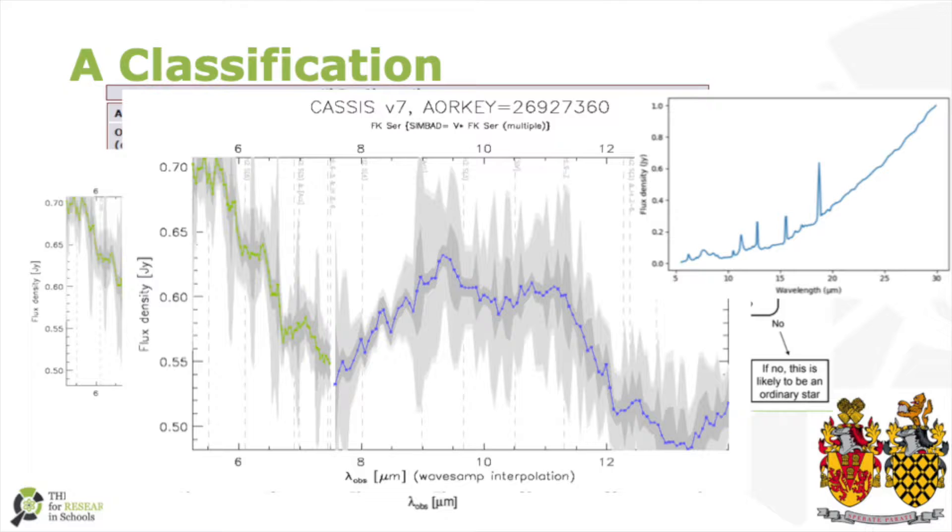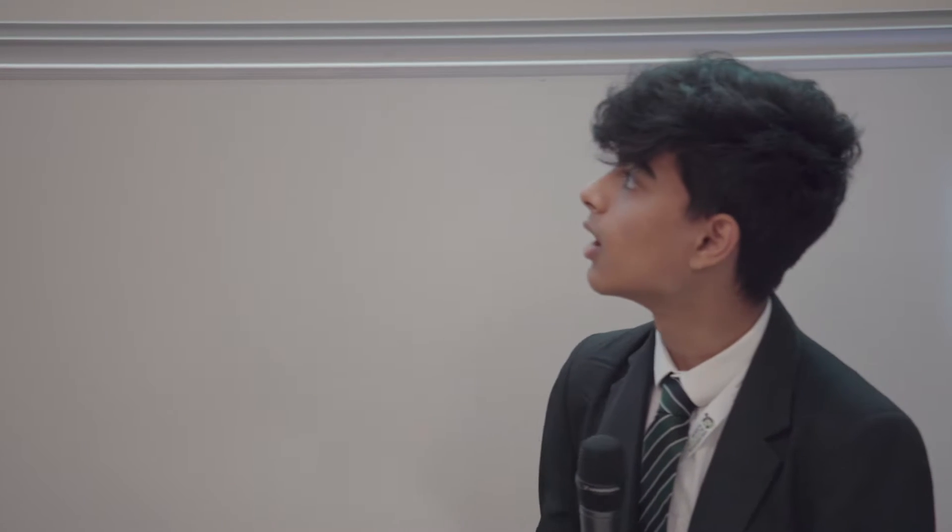This is just an example of an object we classified. This graph over here shows the energy released at different wavelengths. However, it's not too detailed, so we were given a high-resolution graph. Not all of the objects had one, but this one did. As you can see here, this is one of the very few spectra that actually had a high-resolution image, and it's extended to 37 microns rather than 15 microns, which gave us much more scope to actually classify it.